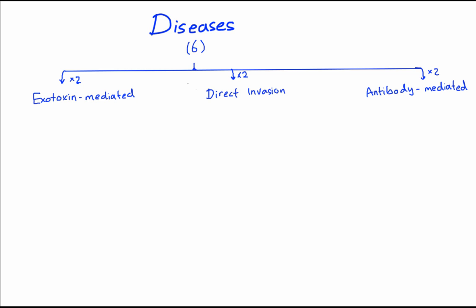Let's start with the exotoxin mediated diseases. The first one is scarlet fever. Scarlet fever comes with a rash, and the rash starts at the neck, then goes down to the trunk, then it involves the extremities, and it spares the face. This pattern is classic for scarlet fever.